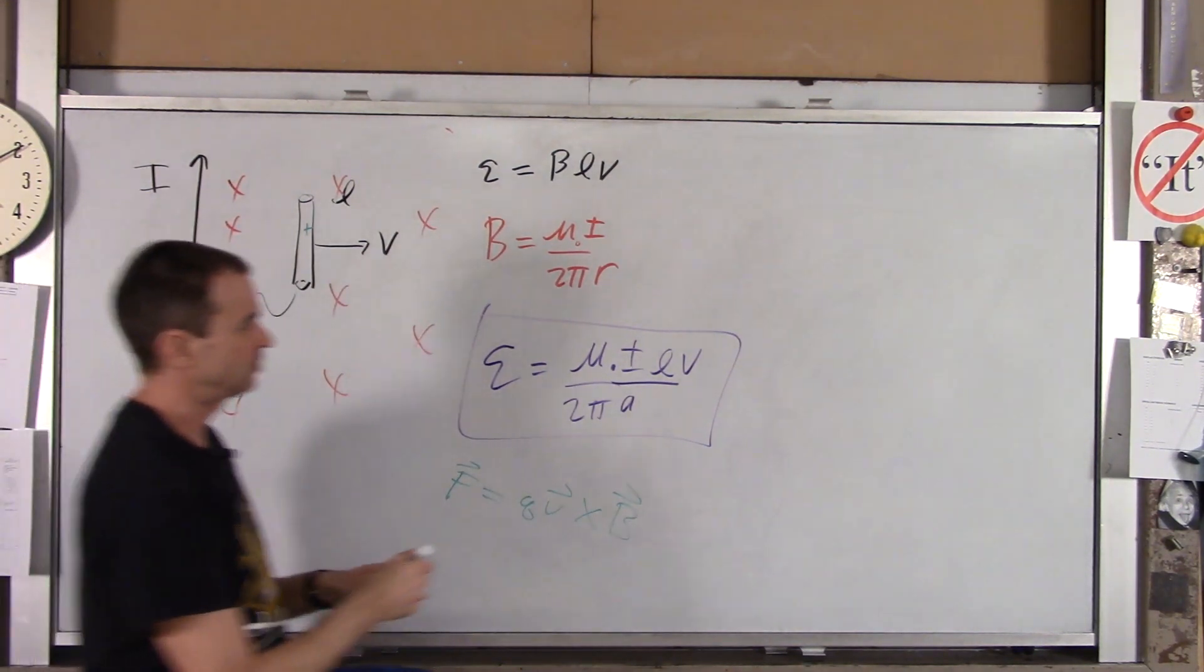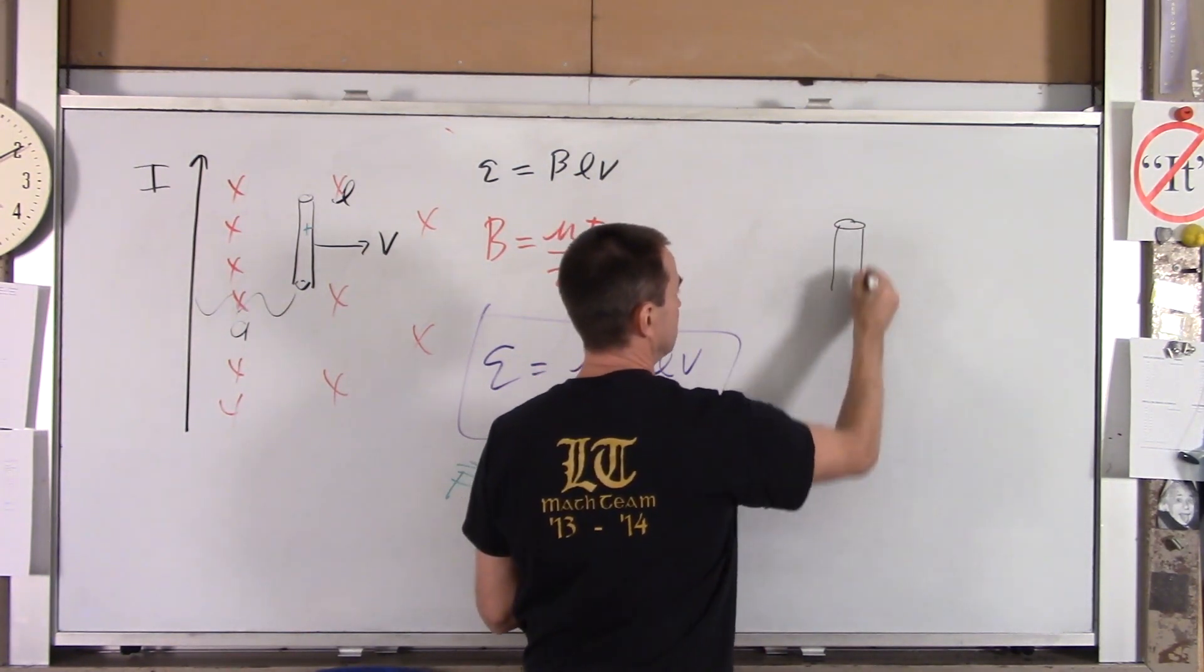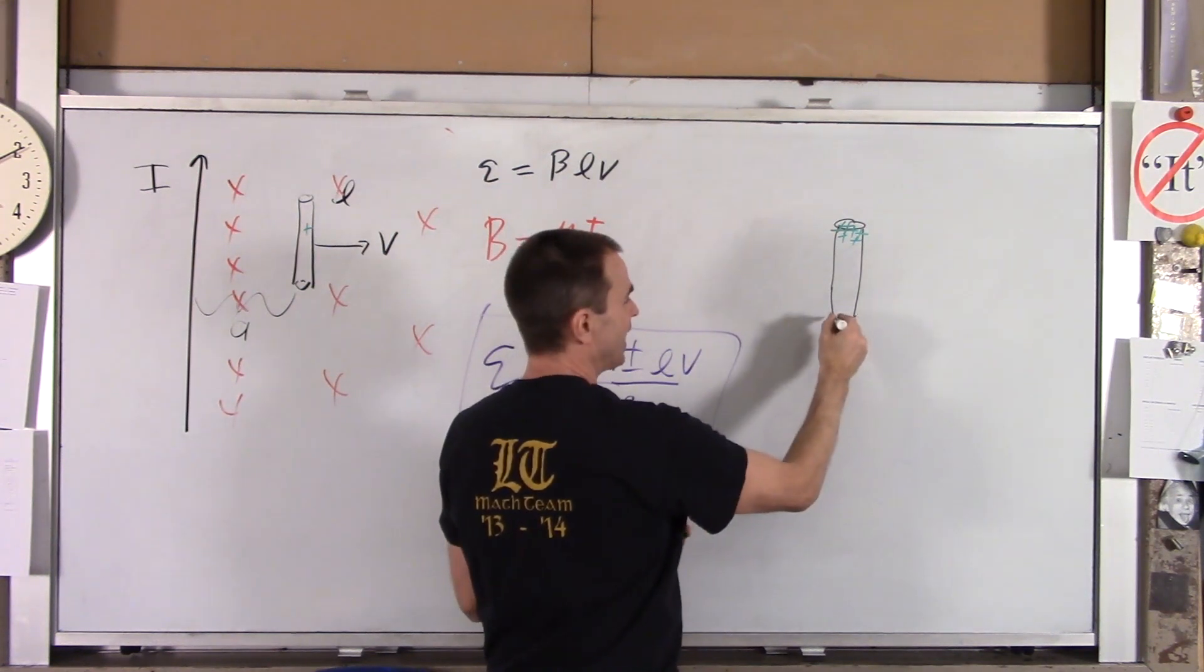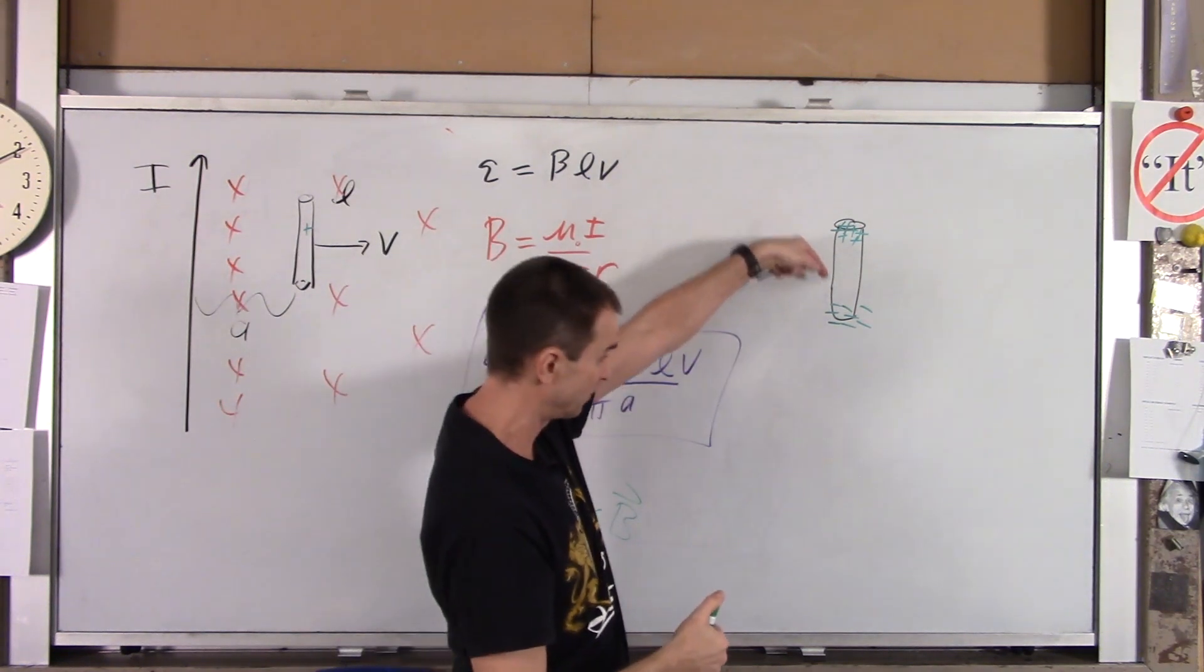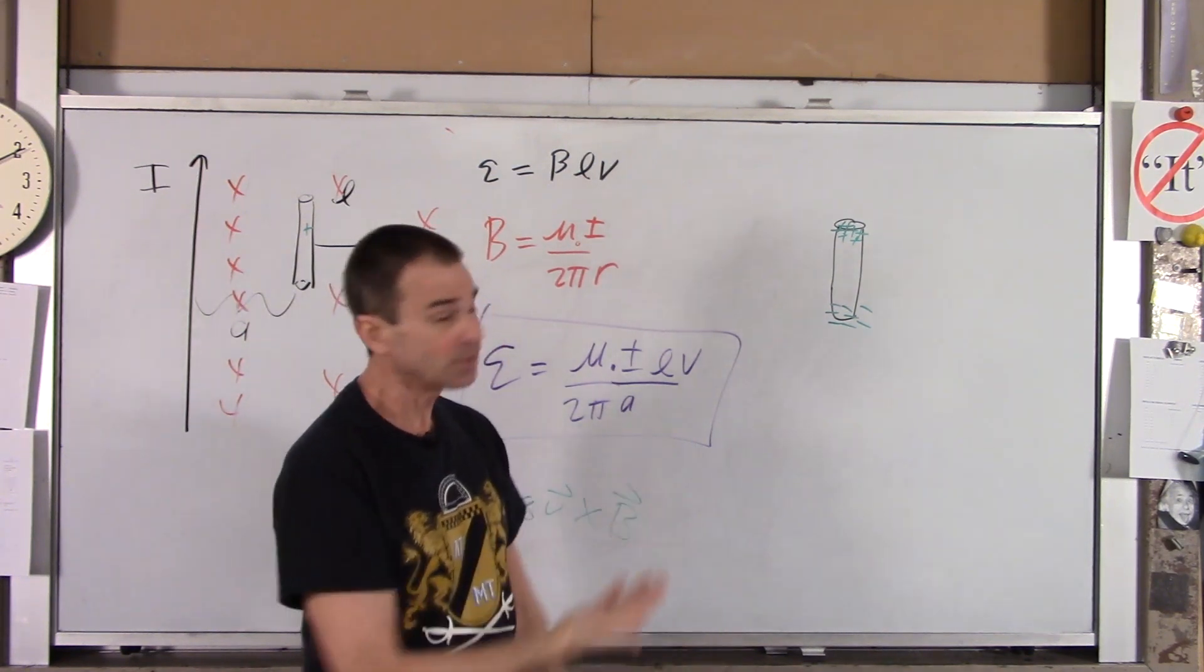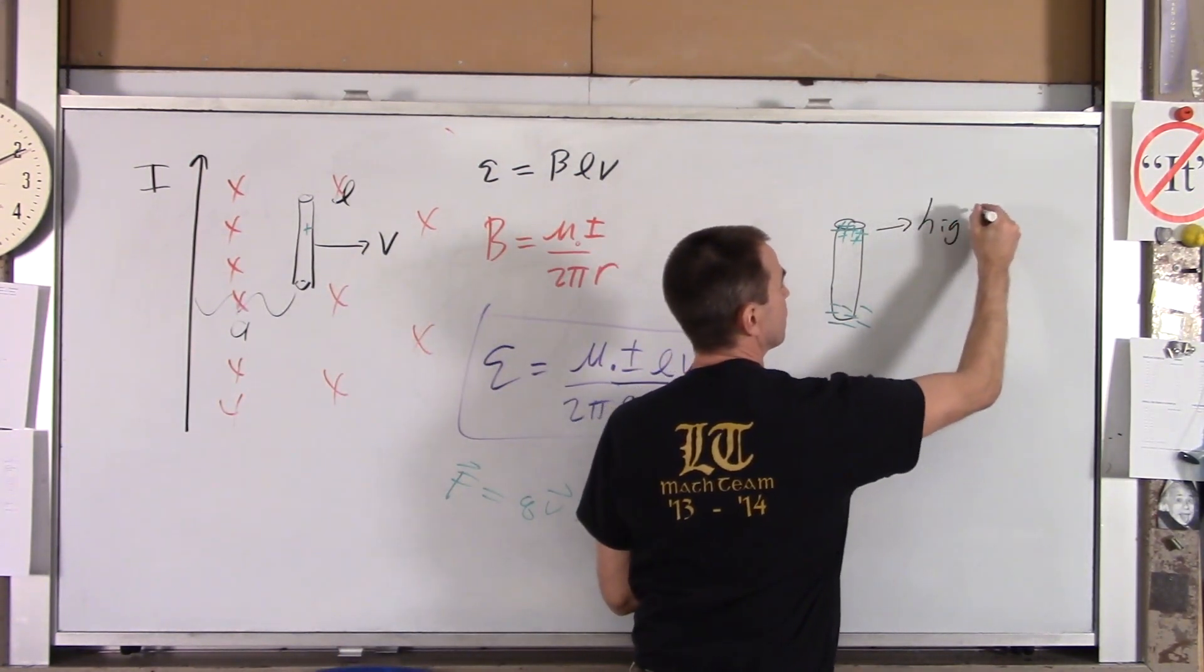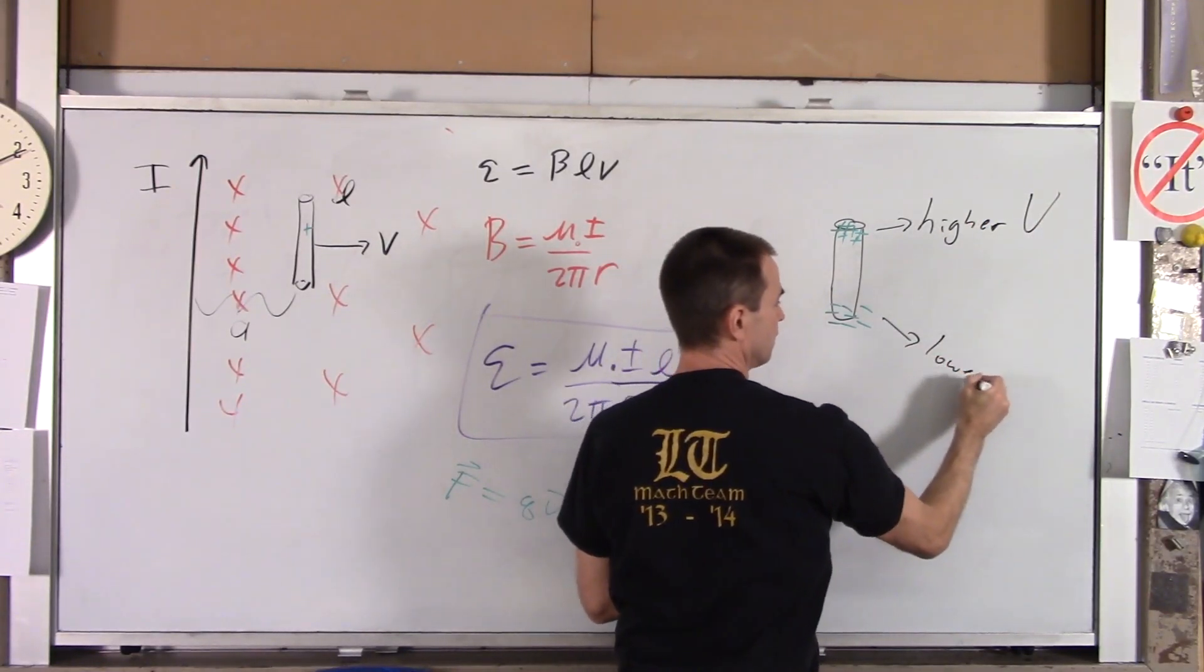So what's going to happen is you're going to have your little chunk of wire here. So I'm going to redraw him. Here he is. At the end of all this, the top of it is going to be positive. That will leave behind negatives down here. Now again, really what happens is the reverse. Really negatives get forced down, leaving behind positives. But you get the same result either way you think of it. Now if that were a little battery, which end of the battery is the positive terminal? Right there. So this end has the higher voltage and this end has the lower voltage.